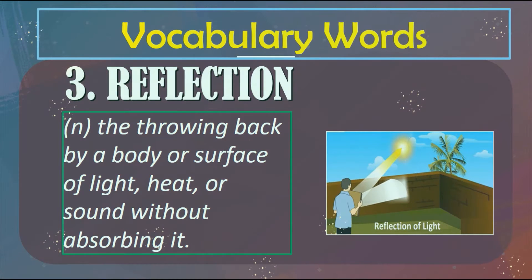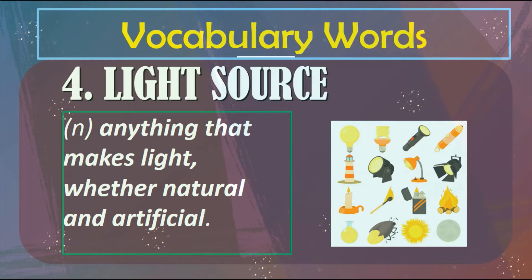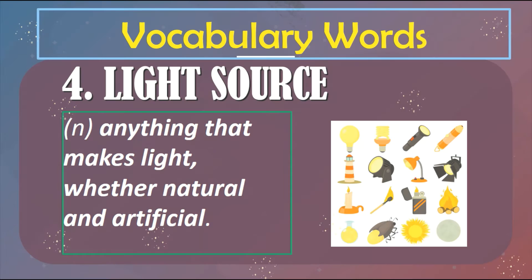Number three: Reflection. Reflection is the throwing back by a body or surface of light without absorbing it. You can see in the picture that when we use a mirror, we can reflect the light from the sun. Number four: Light source. Light source is anything that makes light, whether natural or artificial. So we have a candle, bulb, different types of lights, flashlight, sun, even the firefly — the insect that has a light on its back — and many other things. We call them light sources.